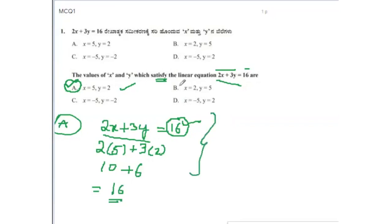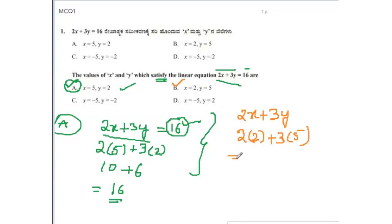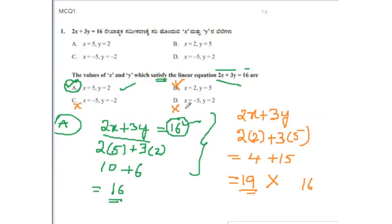For option B, x = 2 and y = 5: 2×2 + 3×5 = 4 + 15 = 19, which is not equal to RHS 16. Therefore option B does not satisfy the equation. Similarly, options C and D also do not satisfy it.